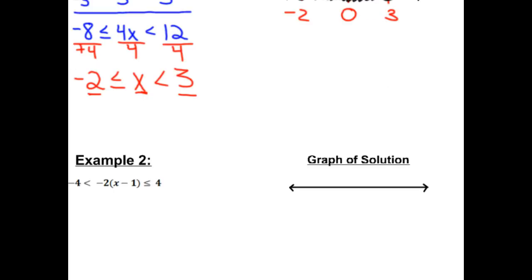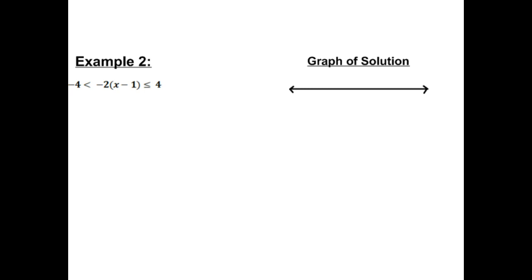Let's try another example. We have -4 is less than -2 times (x - 1), which is less than or equal to 4.